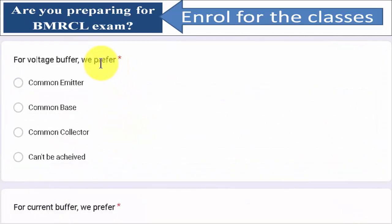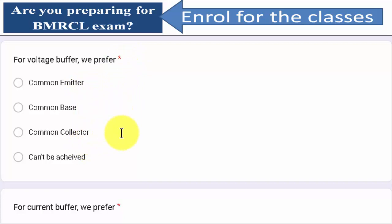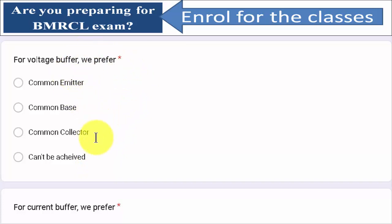First question: for a voltage buffer, we prefer common emitter configuration, common base, or common collector configuration. The fourth option can't be achieved. We know that for a voltage buffer, the answer is common collector configuration.